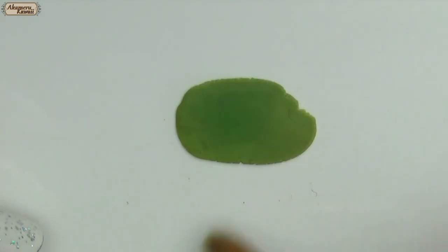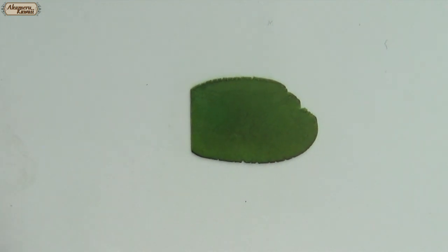For bell peppers I rolled out some green clay and then added a darker green pastel on top. Cut strips and give them the right shape.